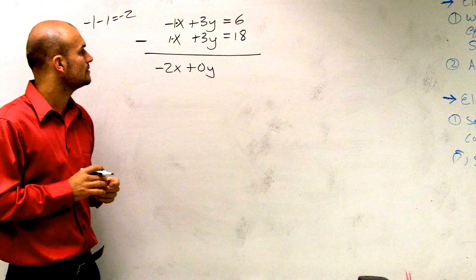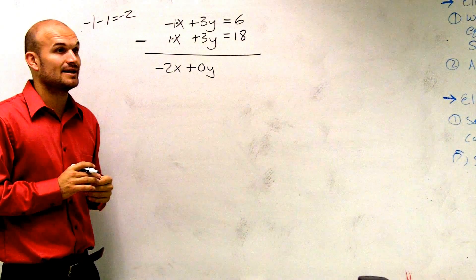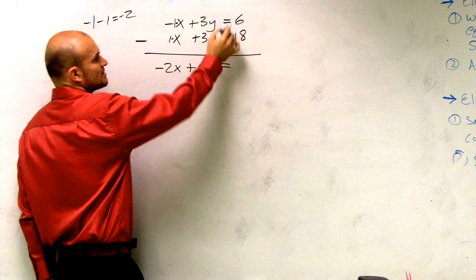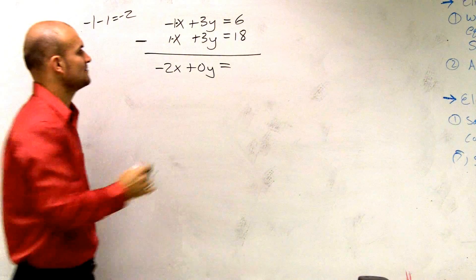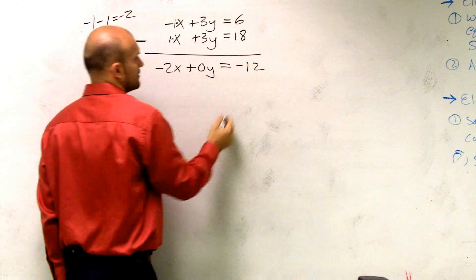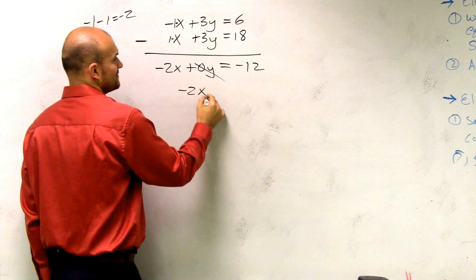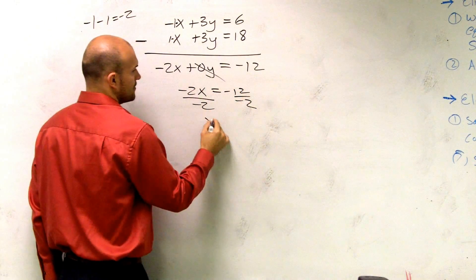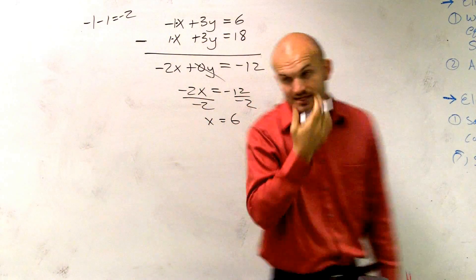If 2x would then be 0, and then? If I added that, but I'm subtracting them. That's all I'm looking at. OK. 6 minus 18 is going to leave me at negative 12. 0y, negative 2x equals negative 12. Divide by negative 2. x equals positive 6.